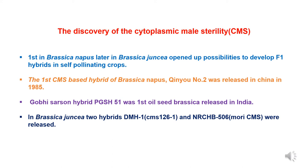Regarding the discovery and importance of cytoplasmic male sterility in hybrid seed production of mustard: CMS was first used in Brassica napus and later in Brassica juncea, where possibilities were found to develop F1 hybrid seeds in self-pollinating oilseed crops. The first CMS-based hybrid of Brassica napus was released in China in 1985, and later Gobhi Sarson hybrid PGSH-51 was the first oilseed Brassica released in India. In Brassica juncea, two hybrids were released: DMH1 and NRCHB506.